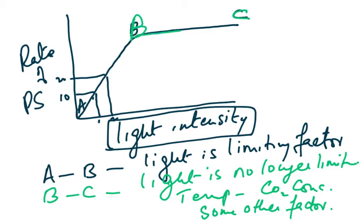Please understand — the rate is constant between B and C, not zero. The reaction has not stopped. Think of it like pressing the accelerator: the car is still moving, just at a constant maximum speed. This is the graph for light intensity, relevant to syllabus points 13.2a and 13.2b.